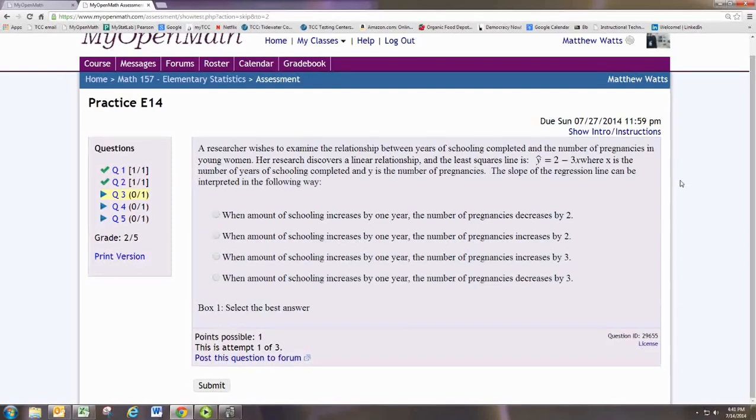The slope is the number multiplied to x. This would be in this case negative 3, since we see negative 3 times x showing up.